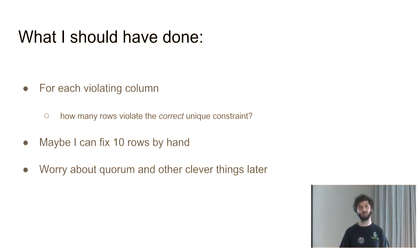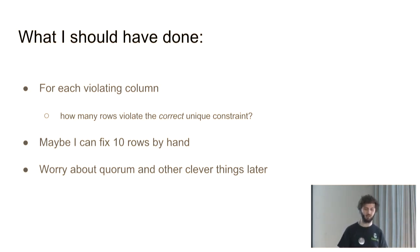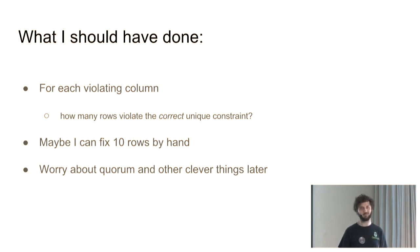Hindsight is 20-20. At this stage I should have stopped and just counted: for how many products is this column wrong? If it's only a few, you can fix it by hand. This is a dataset of about 10,000 to 20,000 rows. If it's a lot, you're not going to fix it by hand.